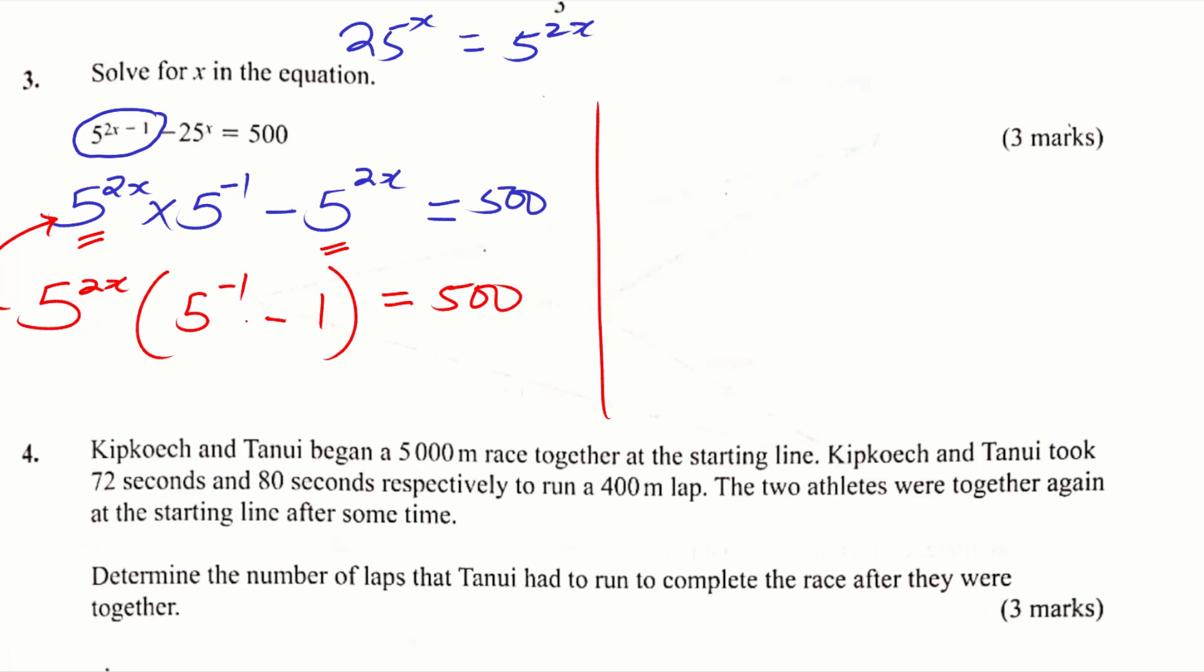Now the next thing you're going to do is to work out whatever is in the bracket. This will give 5 raised to power 2x. 5 raised to power negative 1 is the same as 1 over 5. So you write 1 over 5 there, then minus 1 equals 500. We continue. 5 raised to power 2x multiply by 1 over 5 minus 1 will give negative 4 over 5 equals 500.